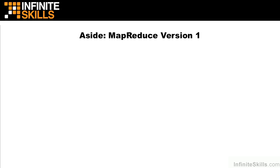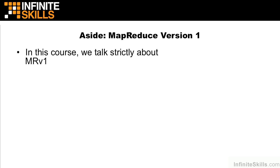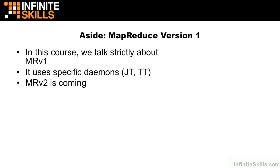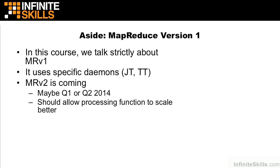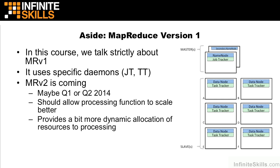As a quick aside, let's talk about the different versions of MapReduce. There's also a MapReduce version 2, but it's not ready for prime time yet. In this course, we're going to talk specifically about MapReduce version 1. It uses its own daemons — the job tracker and the task tracker. MapReduce version 2 is coming for general release and should allow for processing to scale better, and also provides more dynamic allocation of resources. Because MapReduce version 1 is the only stable release available, we won't discuss MapReduce version 2 in this course unless otherwise noted.